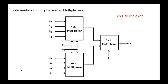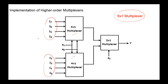Higher-order multiplexers can be designed using fewer-order multiplexers. Here we have an 8-by-1 multiplexer designed using two 4-by-1 multiplexers. We apply four inputs to the first multiplexer and the other four inputs to the second. Two selection lines are connected to both 4-by-1 multiplexers. We need an additional 2-by-1 multiplexer to connect one of these outputs to the final output. The third selection line is used for this purpose.